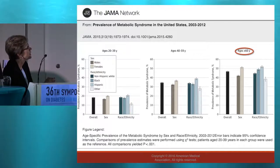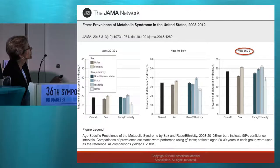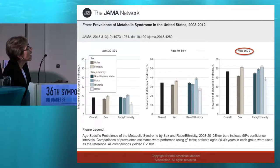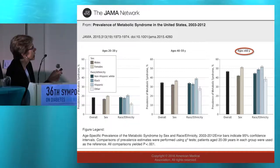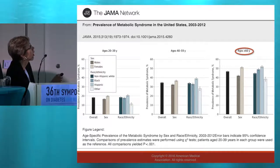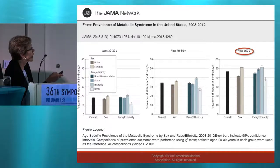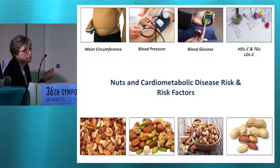Metabolic syndrome increases with age. From a study done in the United States, it's highest in ages 60 and above, overall for both males and females across different races and ethnic groups. But I don't want to downplay the significance of metabolic syndrome at all ages — we're even seeing it now in a lot of children worldwide. So it's a very significant problem.